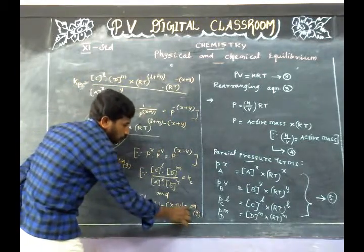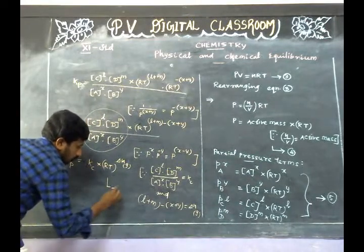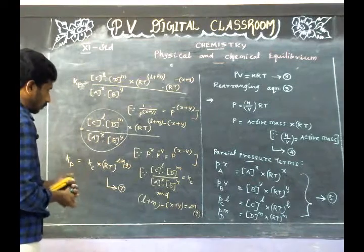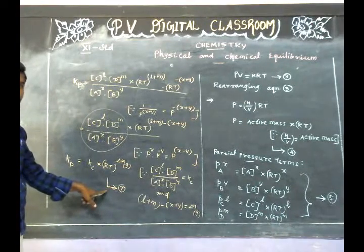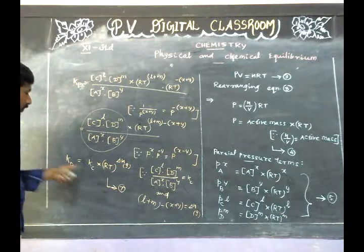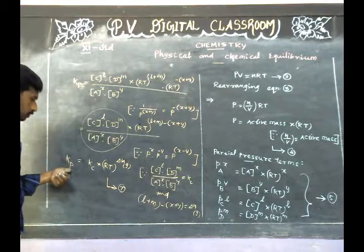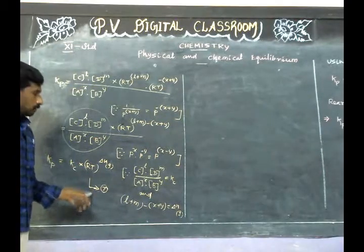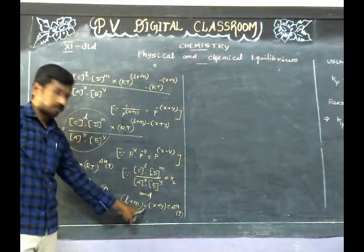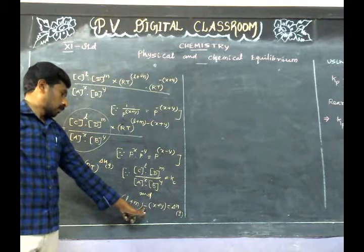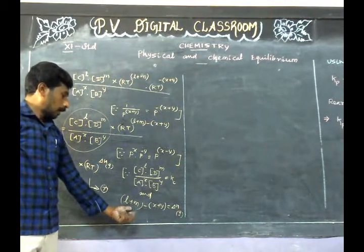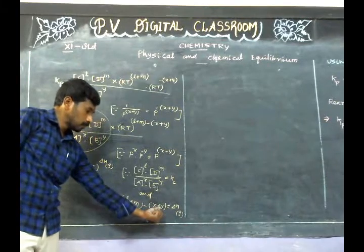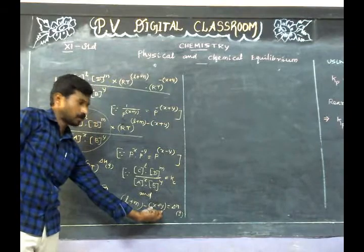Therefore Kp = Kc · (RT)^ΔNg. This is equation number 7. This equation gives the relation between equilibrium constant in terms of partial pressure and equilibrium constant in terms of active mass. In this equation, ΔNg is the difference between the sum of number of moles of products and the sum of number of moles of reactants in the gas phase.